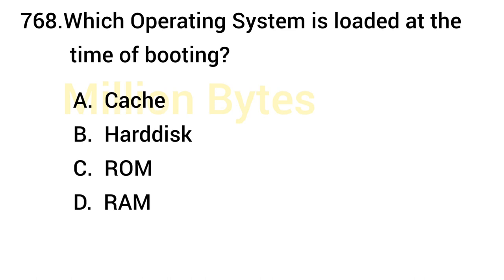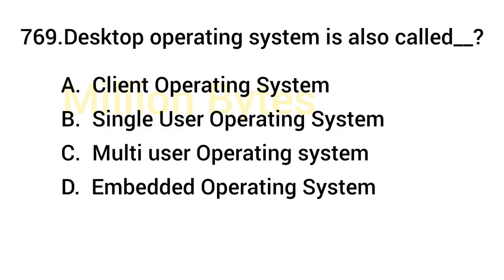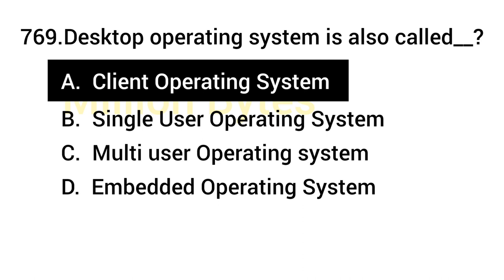Which operating system is loaded at the time of booting? The correct answer is Hard Disk — hard disk is loaded at the time of booting. Desktop operating system is also called Client Operating System.